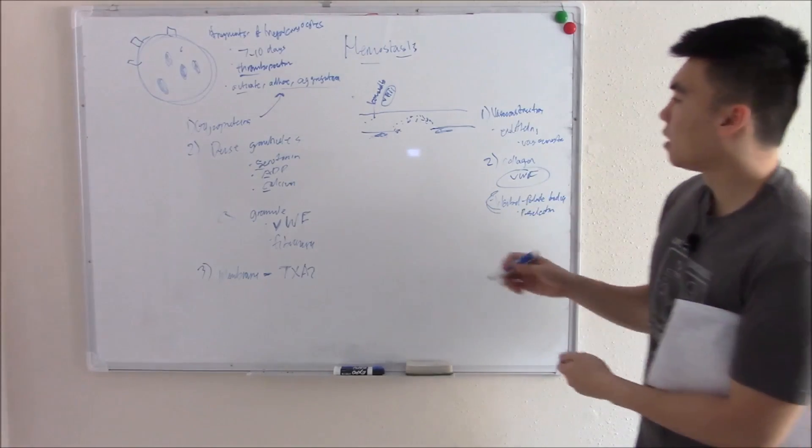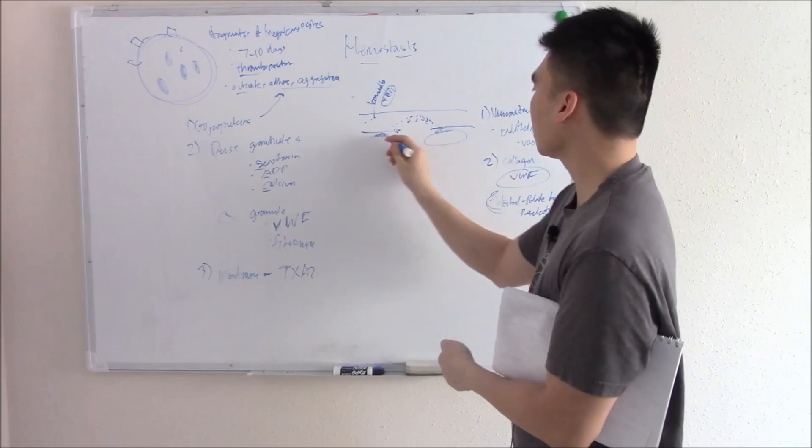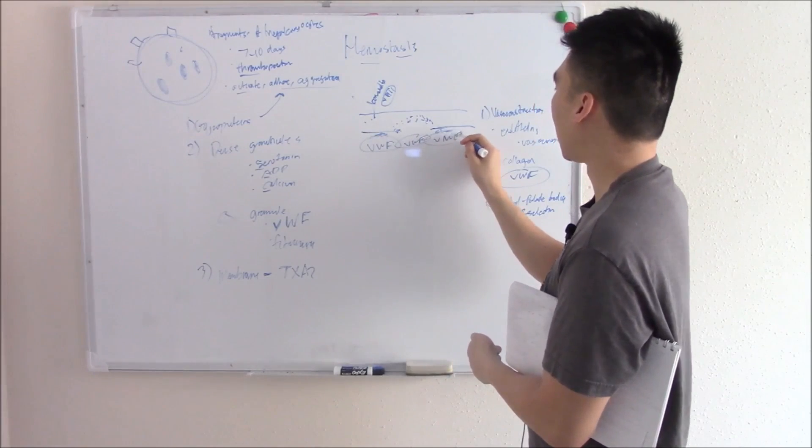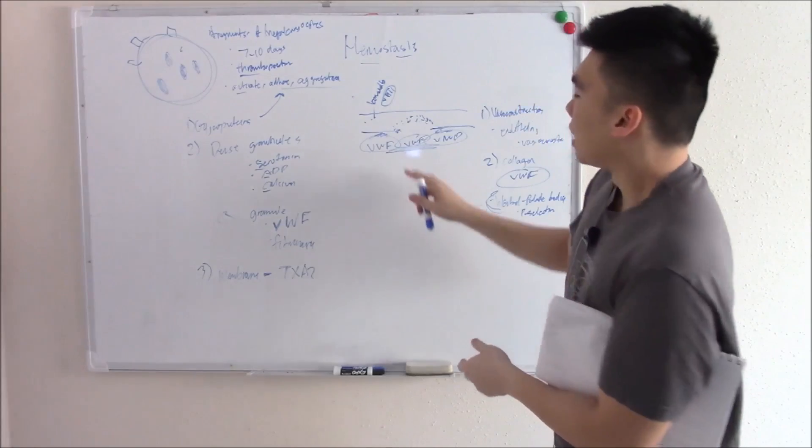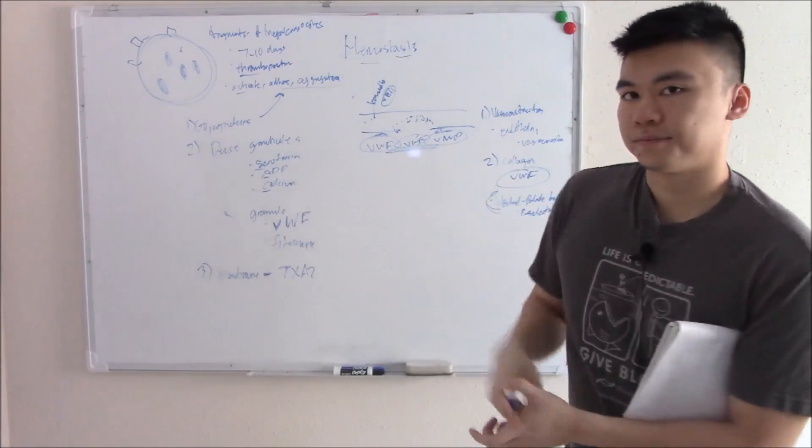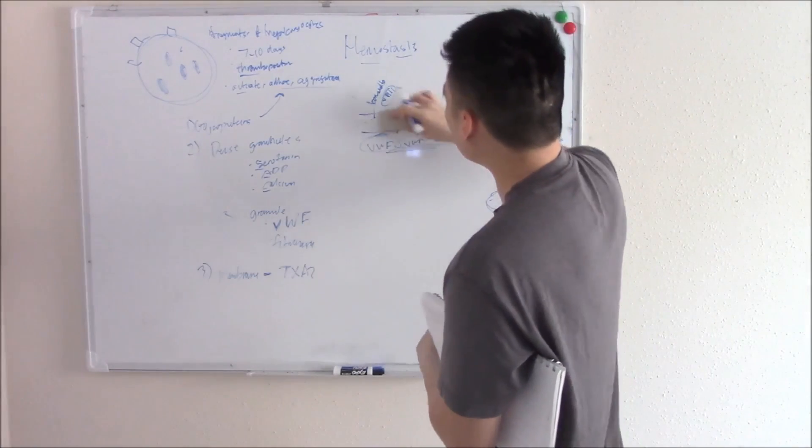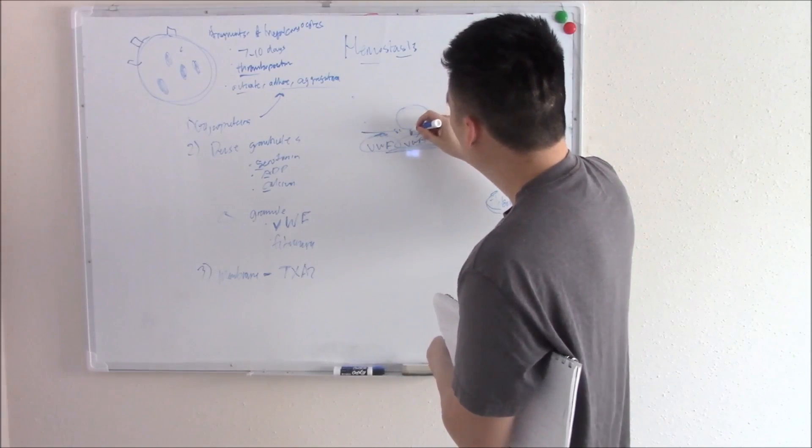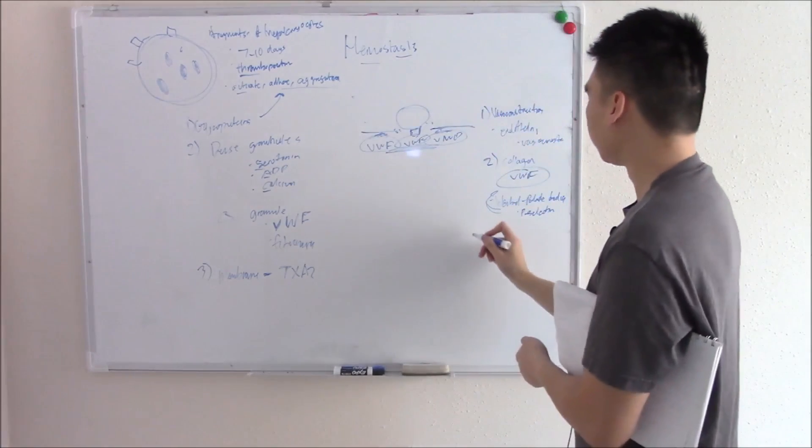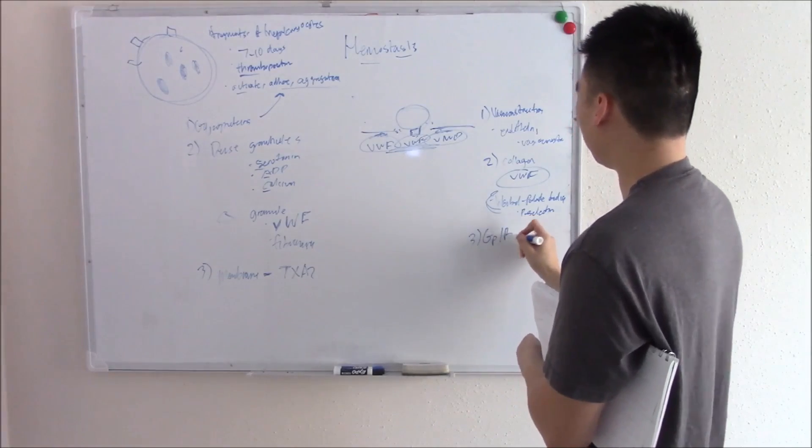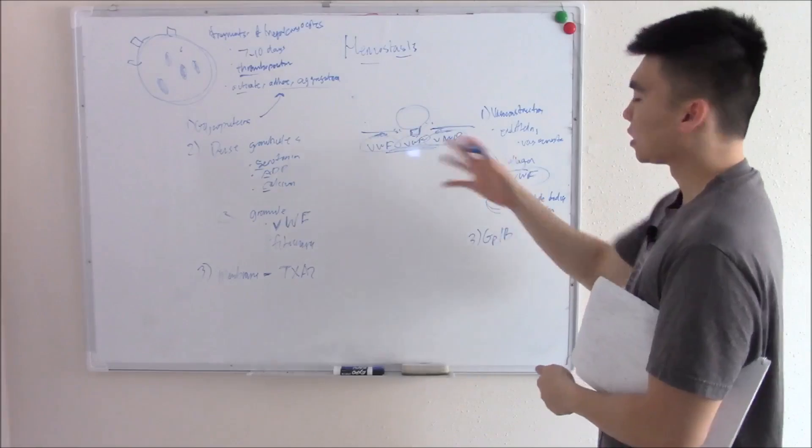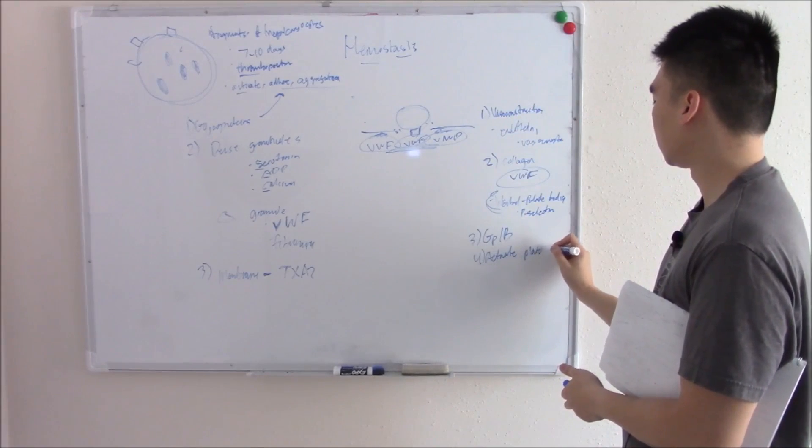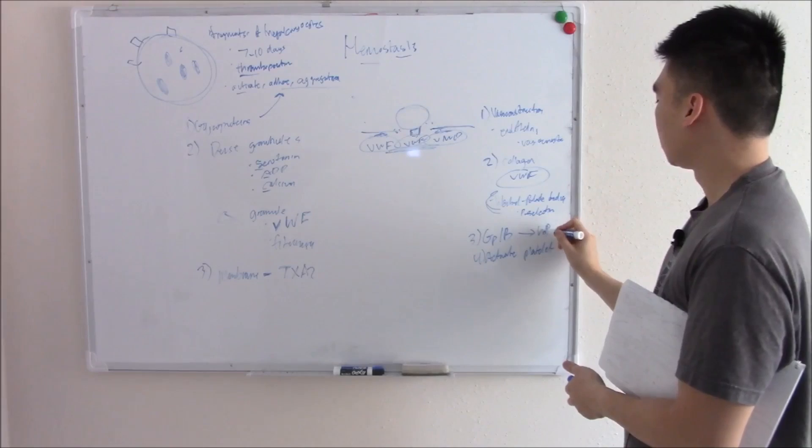Von Willebrand factor is found everywhere because it's very important. Von Willebrand factor will bind the exposed collagen. When your platelets see that von Willebrand factor, it will start to stick to it via the glycoproteins on its membrane, in particular glycoprotein 1b. Glycoprotein 1b will stick to that von Willebrand factor, and when it does that it activates the platelet.